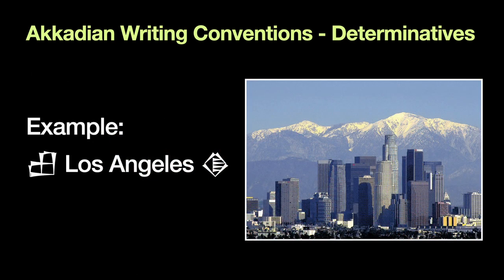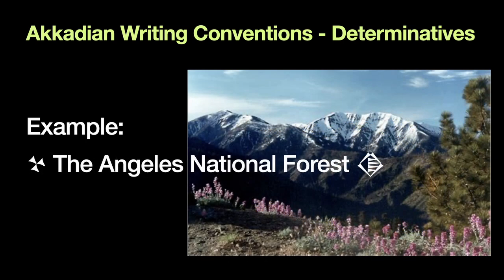If we're looking at the city of Los Angeles, we have two determinatives. The first one on the left is a picture of a city — it's indicating to you that the word that follows is just referring to a city. You also see a character at the end: when you have place names, we'll have a determinative sealed with this key symbol at the end, as a hanging or end determinative. Same with the Angeles National Forest — the image on the left is a picture of mountains, three mountain peaks, indicating the wilderness, the distant place that's not a city.